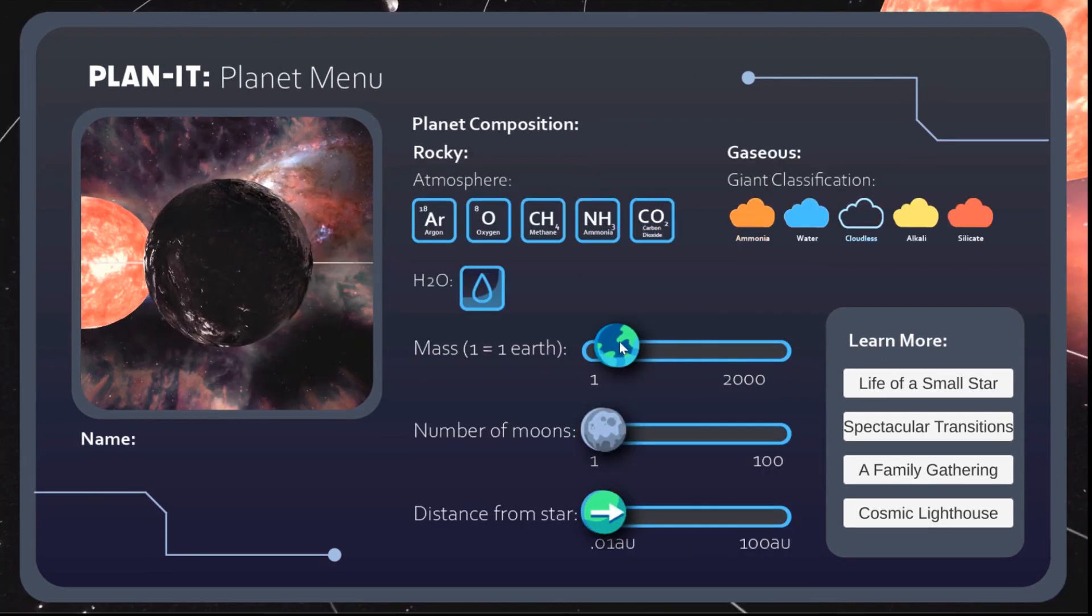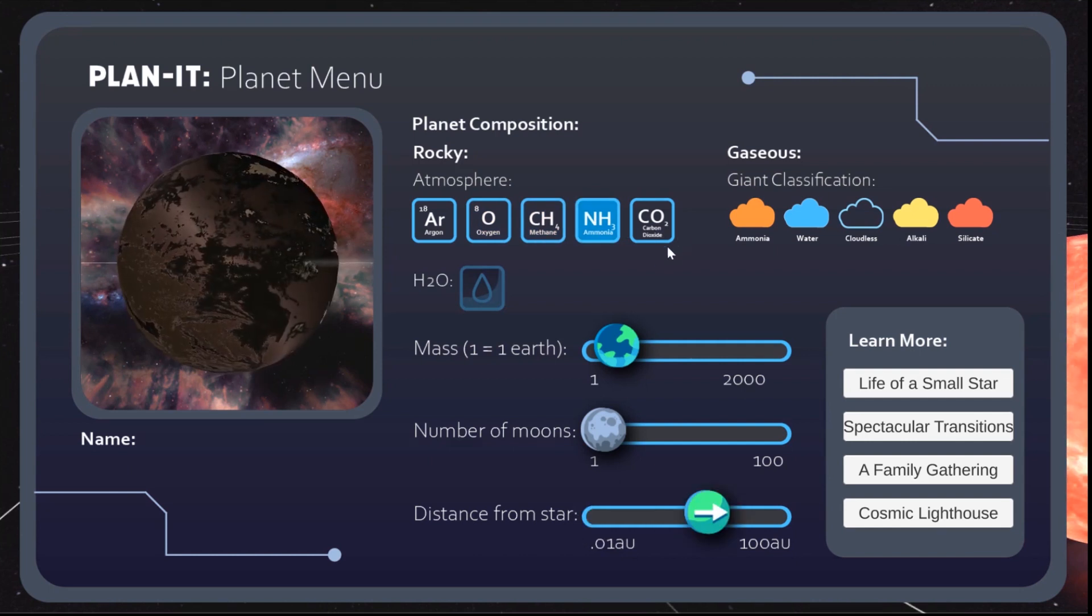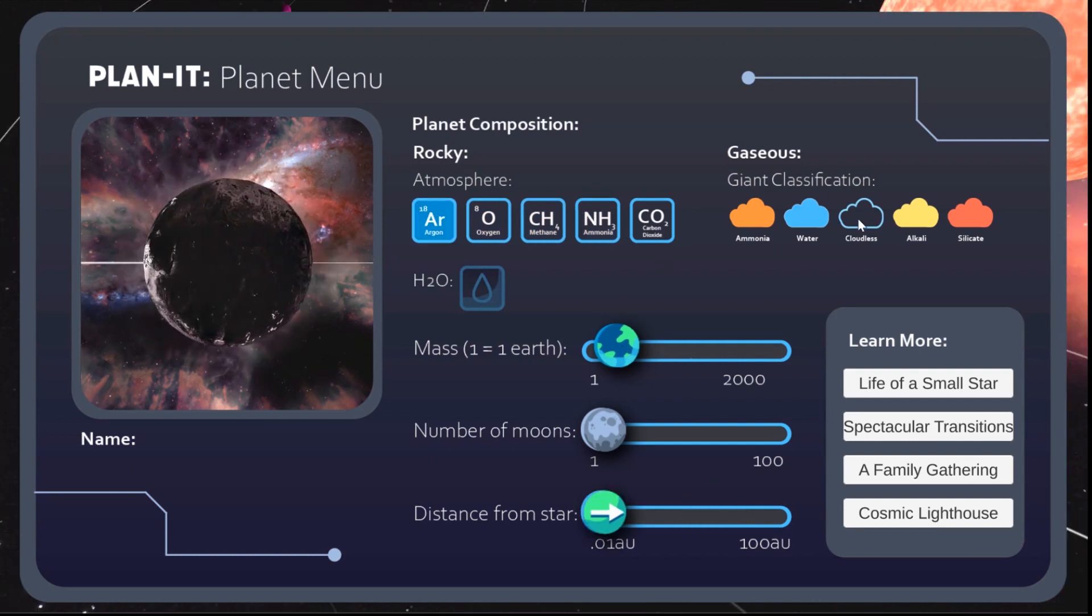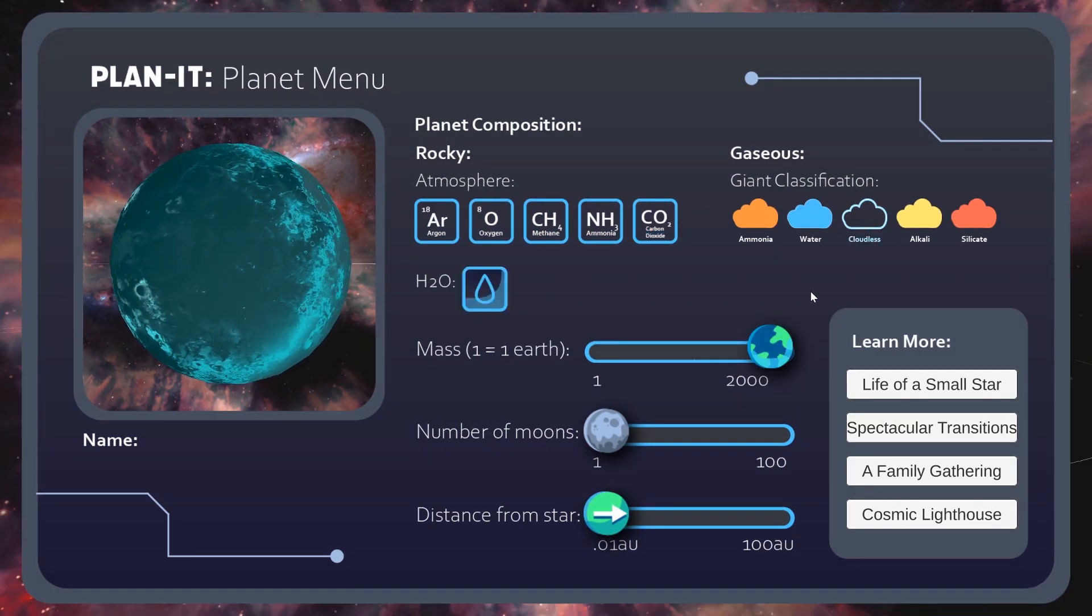You can also personalize your planets. For example, creating a cloudless gas giant creates a noticeable blue hue.